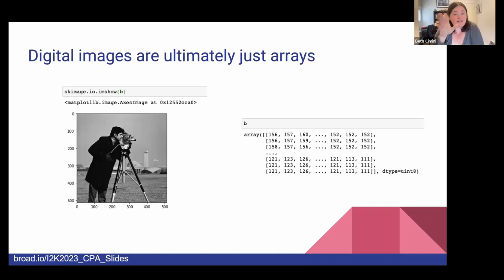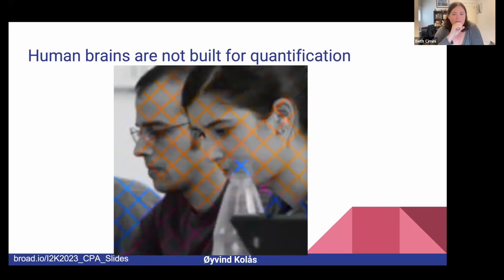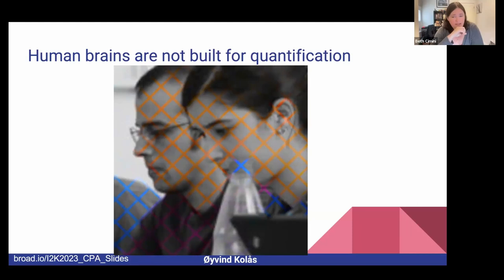Even if you think you can see what's going on in your images, your brain will try to trick you. What we're going to be doing today is a classification where you use your own judgment to decide what's going on in the images, but your brain will try to trick you. If you're looking at this on a small screen, you might think this is a color picture — it's not. It's a gray picture with some colored lines drawn on it, and your brain is filling in the missing information. This is great from an evolutionary standpoint but really bad from a bioimage analysis standpoint. Tools like CellProfiler and CellProfiler Analyst are there to help you make rigorous, properly quantified results that you simply can't do manually, because your brain is not up to the task.